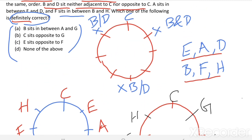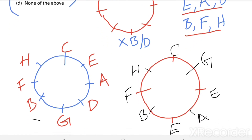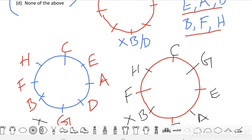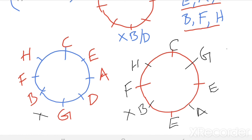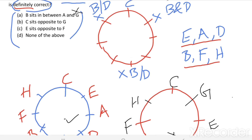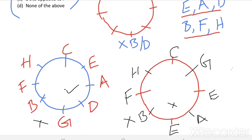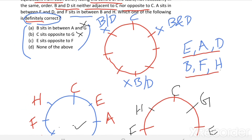Now, see the statements here. Option: B sits in between A and G — in both figures, B is not sitting in between A and G. Therefore, the first statement is not correct. Option: C sits opposite to G — in the first figure C is sitting opposite to G, but in the second figure C is sitting opposite to E. Therefore, C sits opposite to G is not definitely correct. Checking further options — C opposite to F or B — it is not always correct either. So the answer is option D: None of the above is definitely correct, based on the given information.